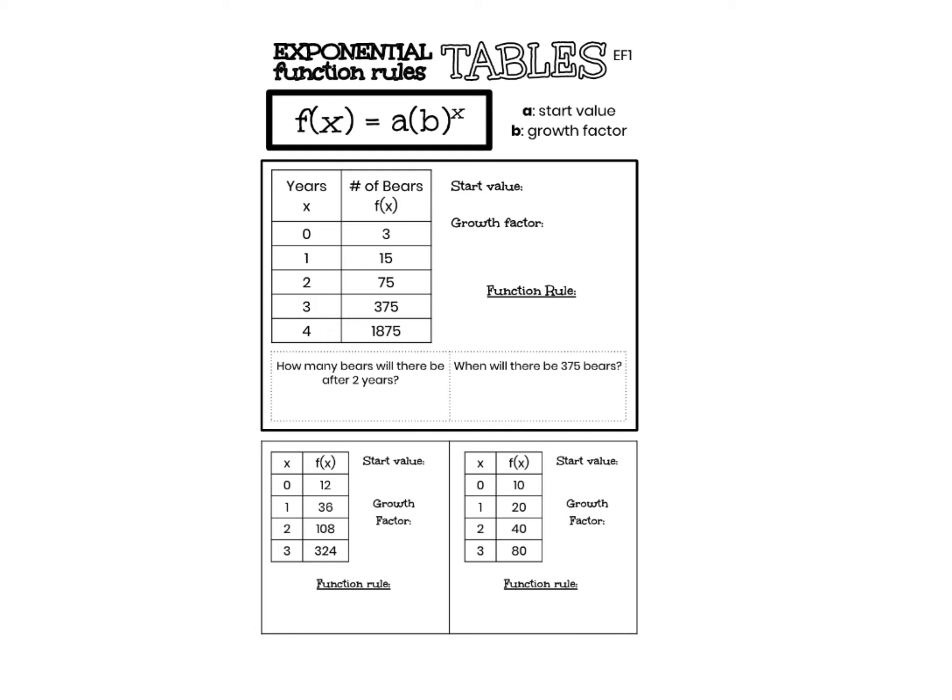This means that when I'm writing a function rule from a table I need to be able to find the start value a and the growth factor b from the table. Let's go ahead and look at this first example. In this first example I have years x and number of bears f(x). To write a function rule representing the situation I need to find the start value and the growth factor.